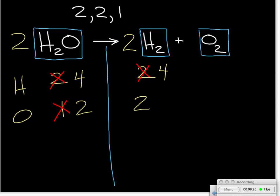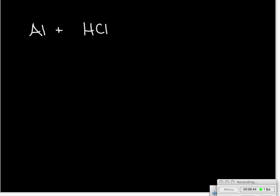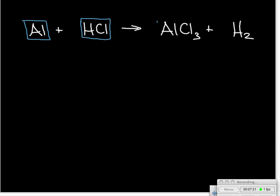Now let's do another example — the reaction of aluminum with hydrochloric acid. This reaction produces aluminum chloride, AlCl₃, and hydrogen gas. Again, if you're comfortable knowing not to change any subscripts or put a coefficient in the middle of something like HCl, that's fine — but as you're learning, it's not a bad idea to put a little box around each substance as a reminder.